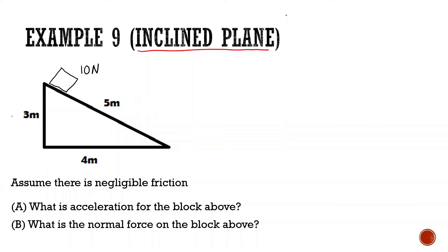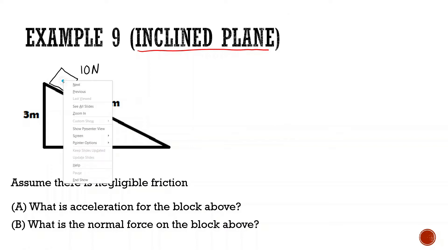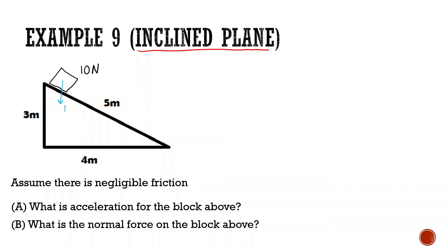First, we're looking at this diagram here. Assume there's negligible friction — what is the acceleration for the block? So first what I'm going to do is draw all the forces acting on this. Remember, force of gravity always acts from the center and pulls straight down. And then there's going to be a normal force going up. Those are the only two forces if there's no friction.